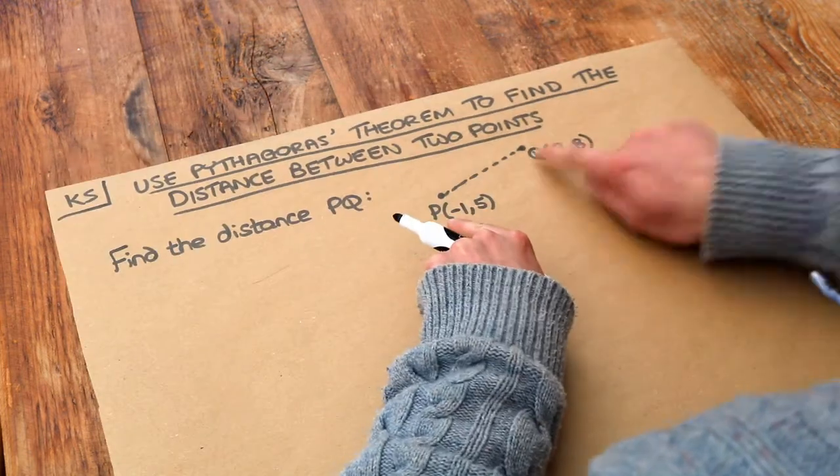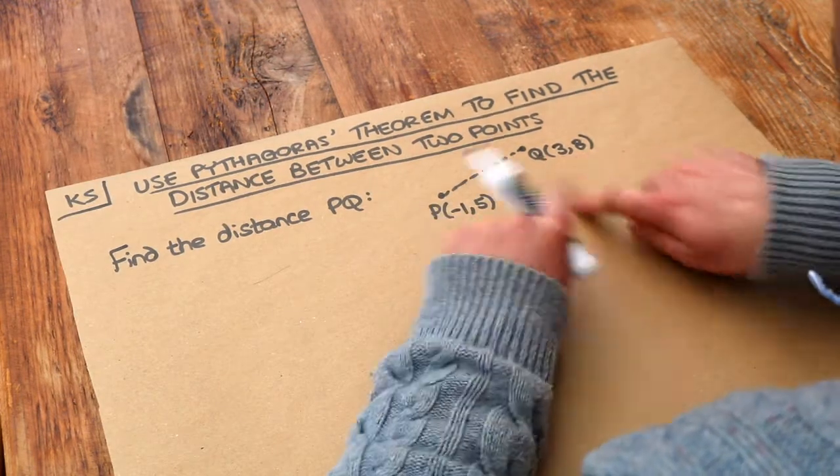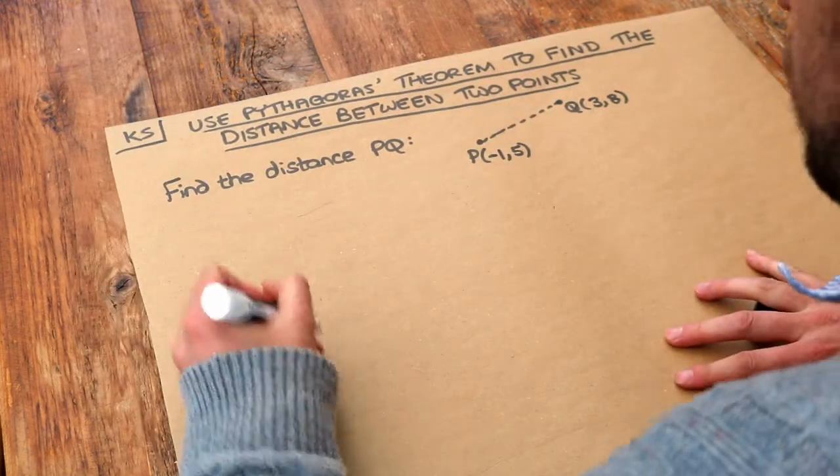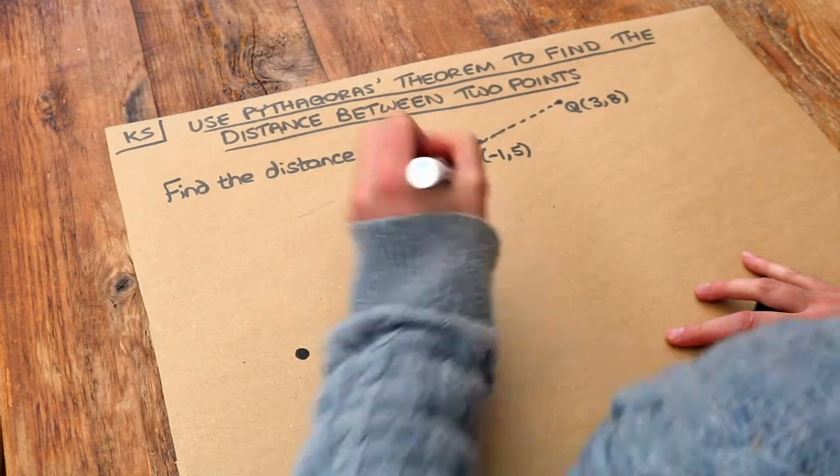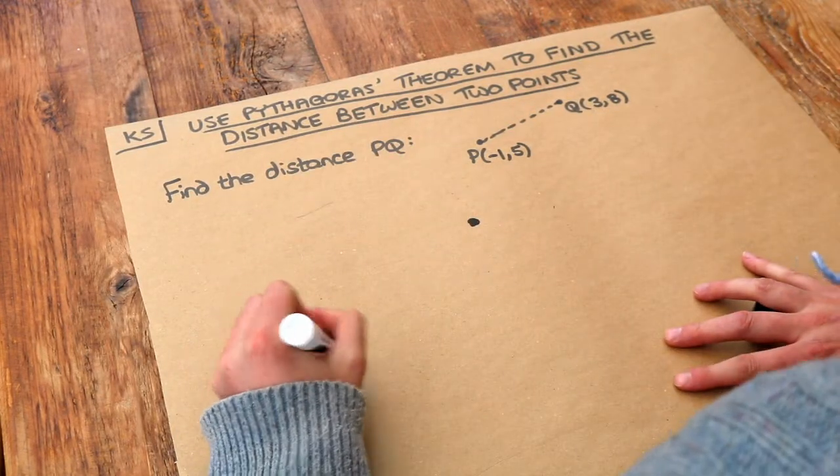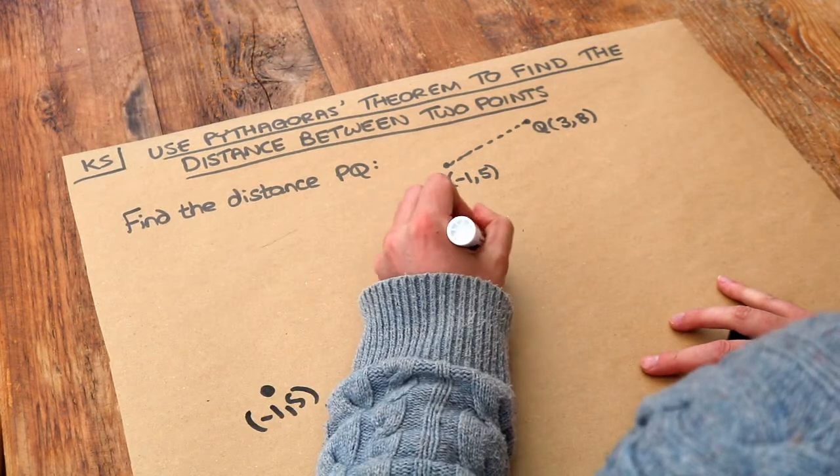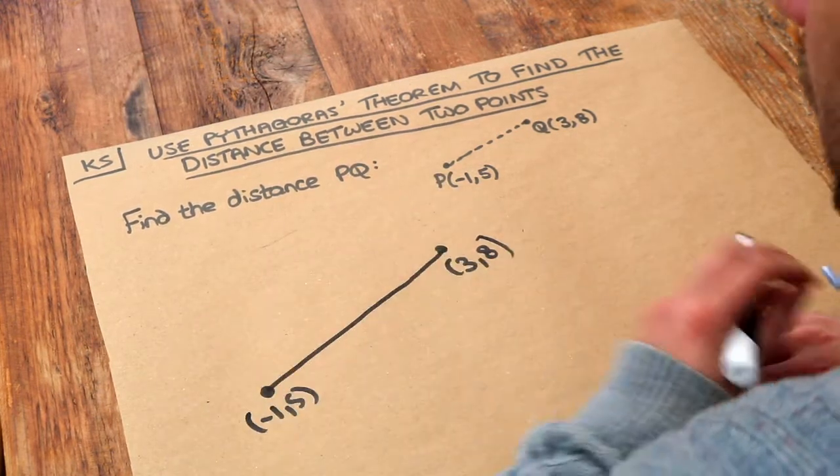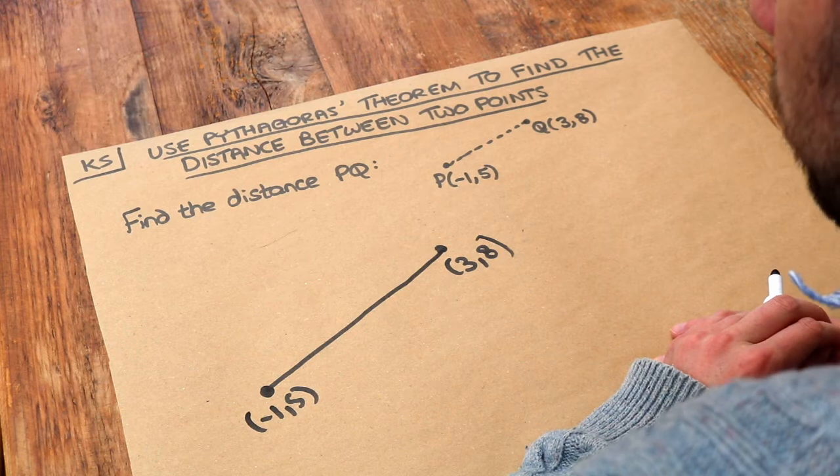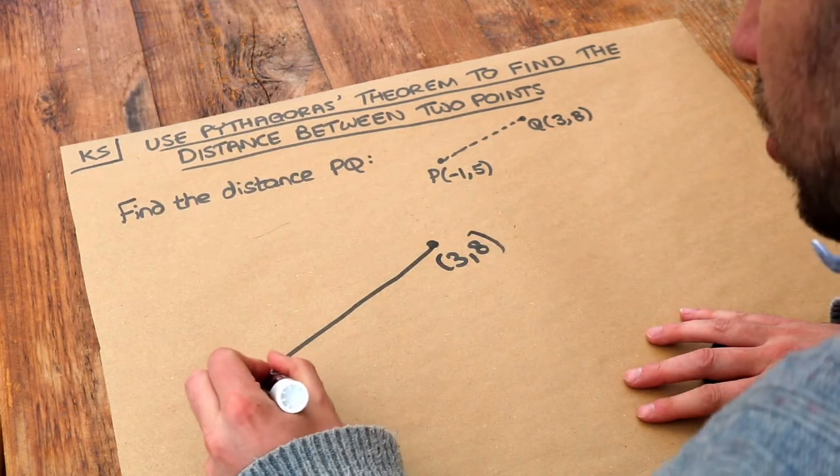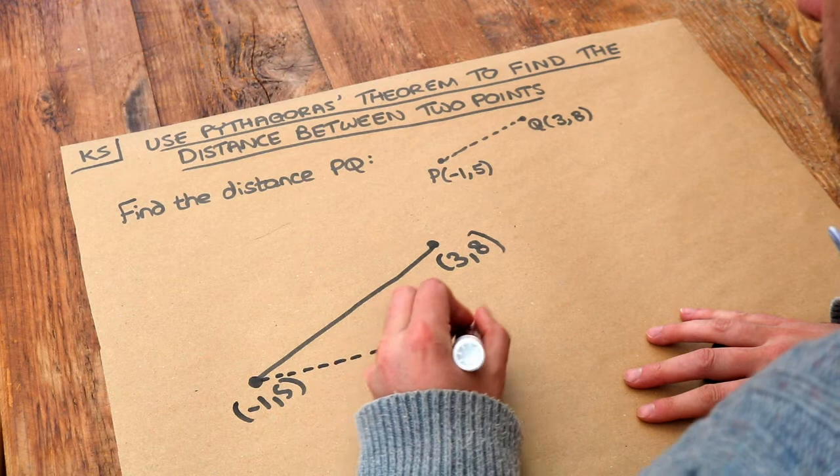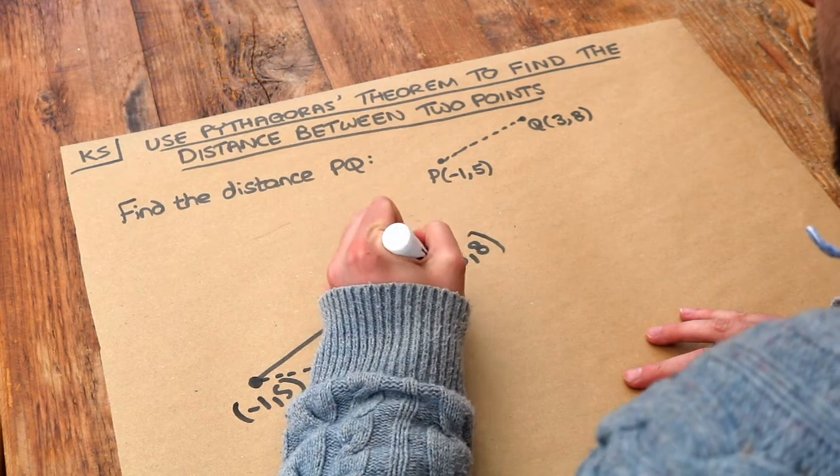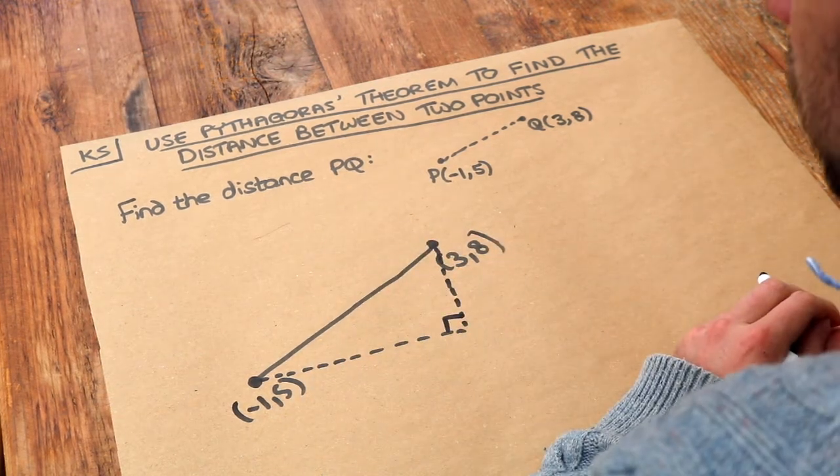So we want to find the distance between these two points where we're given the coordinates of each of the points. Now let me just draw it extra big. We've got minus 1, 5 here and we've got 3, 8 here and we're going to find this distance between them. Now we can form a right angle triangle using this line. So if I do a horizontal line and a vertical line, that forms a right angle triangle.